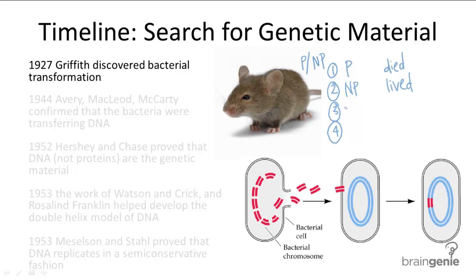In the third experiment, he heated up the pathogenic strain, which effectively killed the pathogenic bacteria, injected it into the mice, and the mice all lived. The fourth is the most interesting. He took this heated pathogenic strain — the dead pathogenic strain — mixed it with non-pathogenic live bacterial cells, injected it into the mice together, and the mice died.